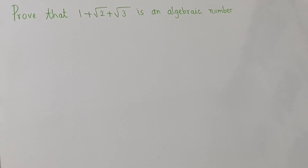Simplifying, we get a polynomial equation with integer coefficients. Since all integers are also rational numbers, we find that 1 plus square root of 2 plus square root of 3 is a root of a polynomial equation with rational coefficients, and hence x is an algebraic number. This proves our claim. Thank you.